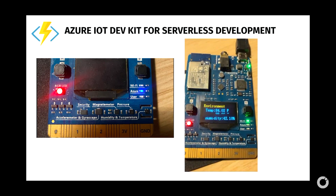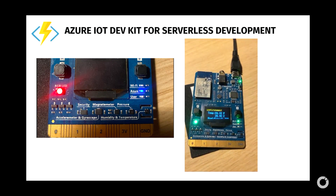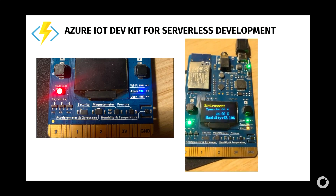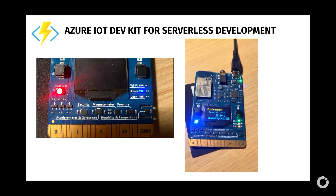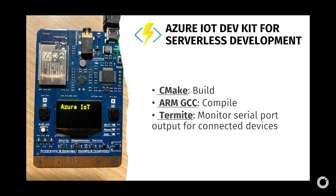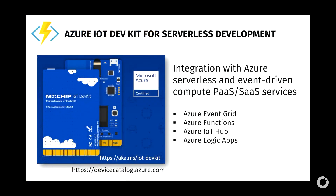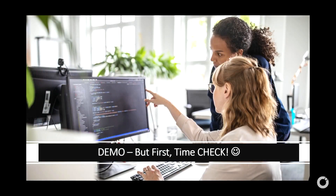One thing I enjoy when learning event-driven workflows is the Azure IoT Dev Kit — it's a gadget I work with. You build it with CMake, compile with ARM GCC, and monitor the serial port with Termite, then integrate with serverless or PaaS services like Azure Event Grid, Azure Functions, and Logic Apps. I was going to demo this but we're running about 20 minutes behind, so I'll skip the demo.